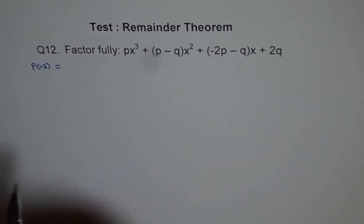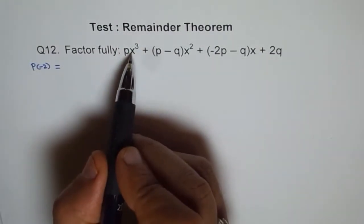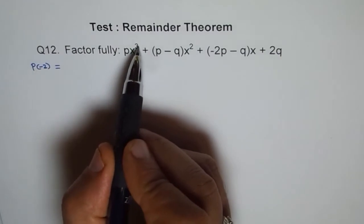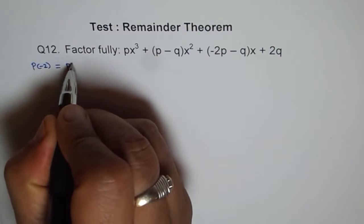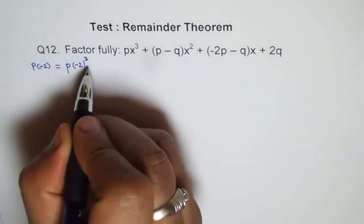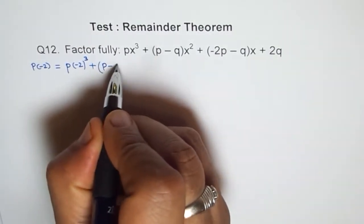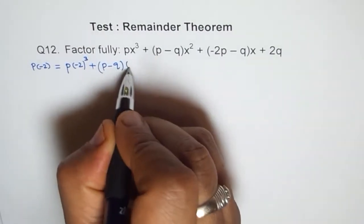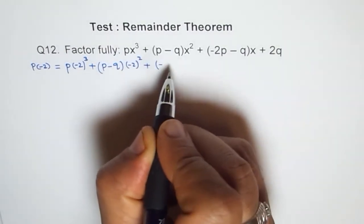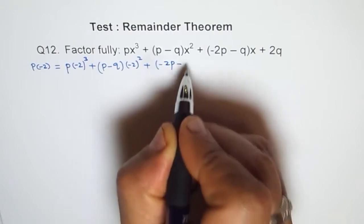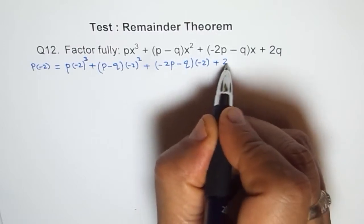What is p of minus 2 for us? We'll replace this x with minus 2. You get p(-2)³ + (p-q)(-2)² + (-2p-q)(-2) + 2q.